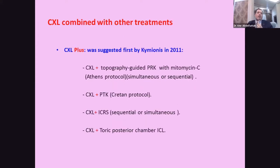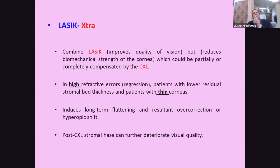Cross-linking can be combined with other treatments — called cross-linking plus. Options include cross-linking with topography-guided PRK with mitomycin-C (the Athens protocol), sequential or simultaneous cross-linking with PTK (the Cretan protocol), cross-linking with corneal ring segments, and cross-linking with toric ICL. LASIK extra combines LASIK with cross-linking: LASIK improves vision quality but reduces biomechanical strength of the cornea, which can be partially or completely compensated by cross-linking. LASIK extra is used in high refractive errors and patients with thin corneas, though it can induce long-term corneal flattening and possible overcorrection or hyperopic shift.